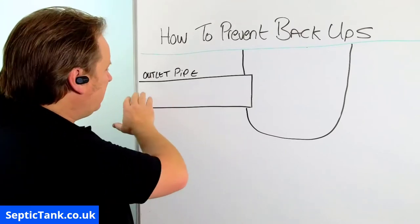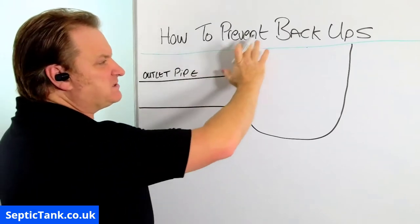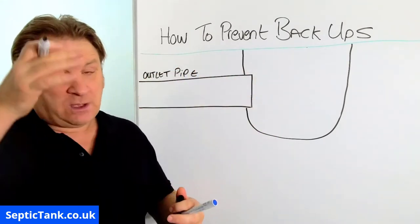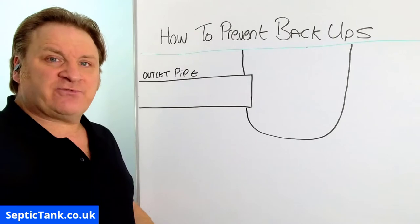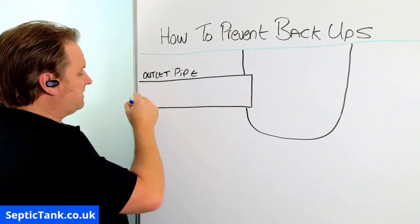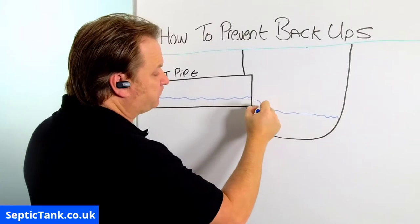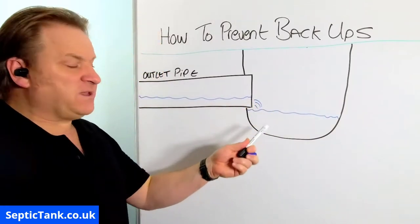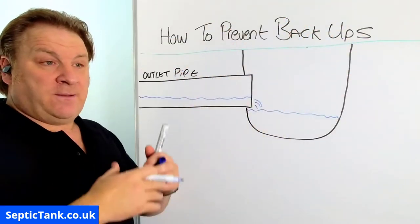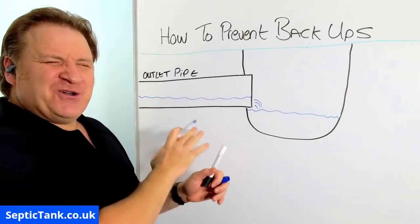Here we've got an outlet pipe, which is obviously coming from your sewage system. This is a ditch or a river — a cutaway section of a river, a ditch, a brook, stream, whatever. What happens generally throughout the dry months of the year is the waste water makes its way down the outlet pipe and from there into the ditch, and from the ditch or the river it just goes down its natural path and drains away eventually back into other rivers or streams and eventually the sea.